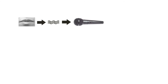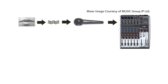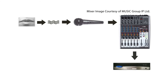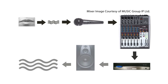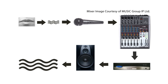Let's review. Sound waves are captured by microphones and converted into electrical signals. Electrical signals are combined into a single signal at the mixer. The signal is sent to the amplifier to increase its volume. And finally, the amplified signal is sent to the speaker to be turned back into sound waves.